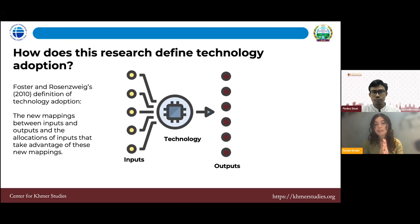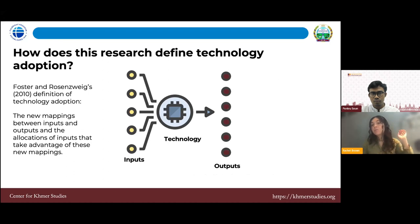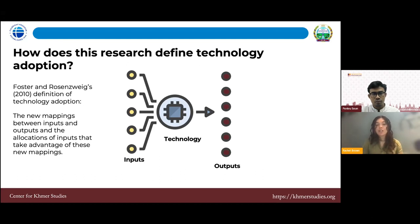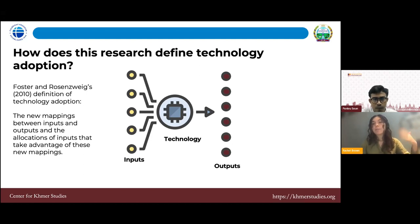How does this research define technology adoption? Very broadly, technology adoption is anything that changes how you use your inputs and how they create outputs. For farmers, inputs include fertilizer and land. Technology is anything you do that alters those inputs to become outputs like rice or cassava. So it's not simply something on your phone or SMS messaging. It's really how you're changing your inputs, allocating them, and what new things you're creating.